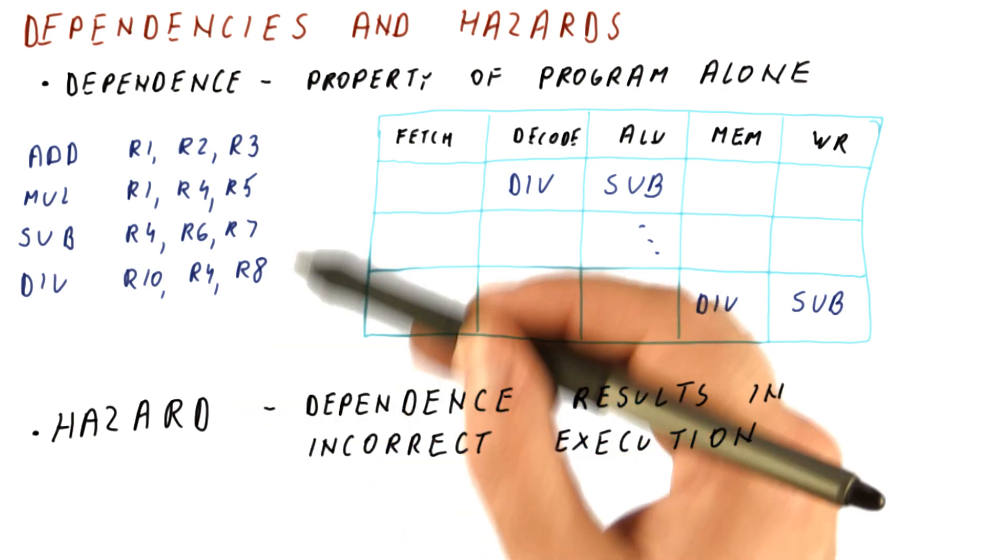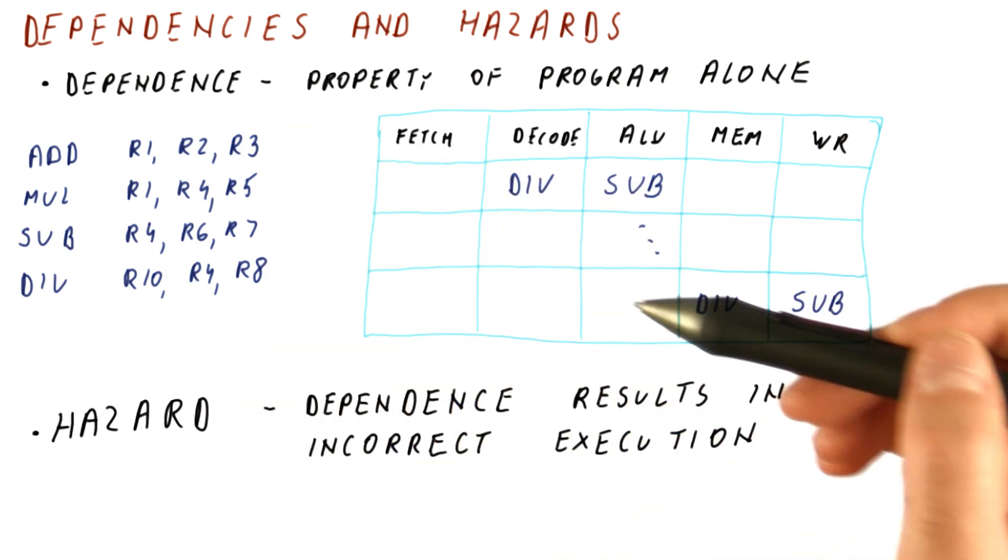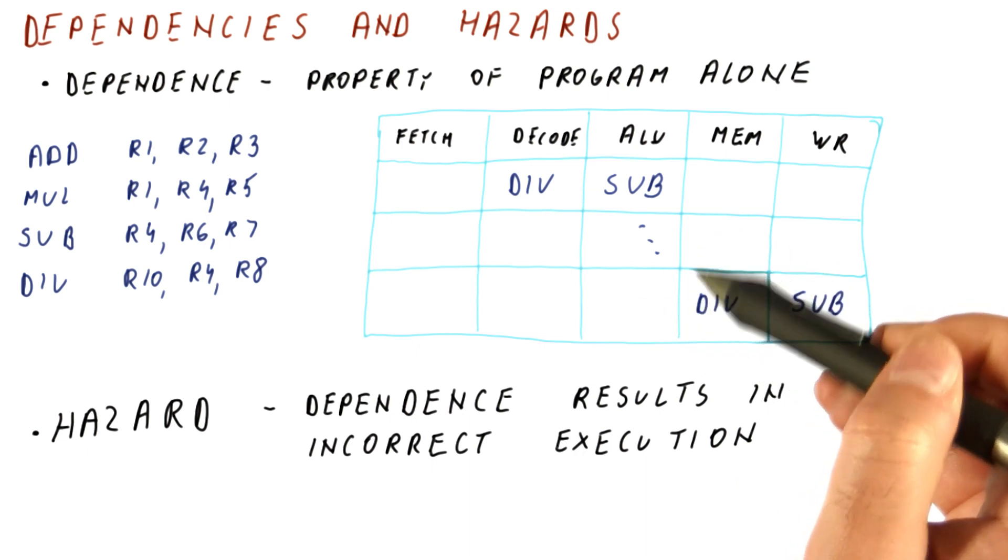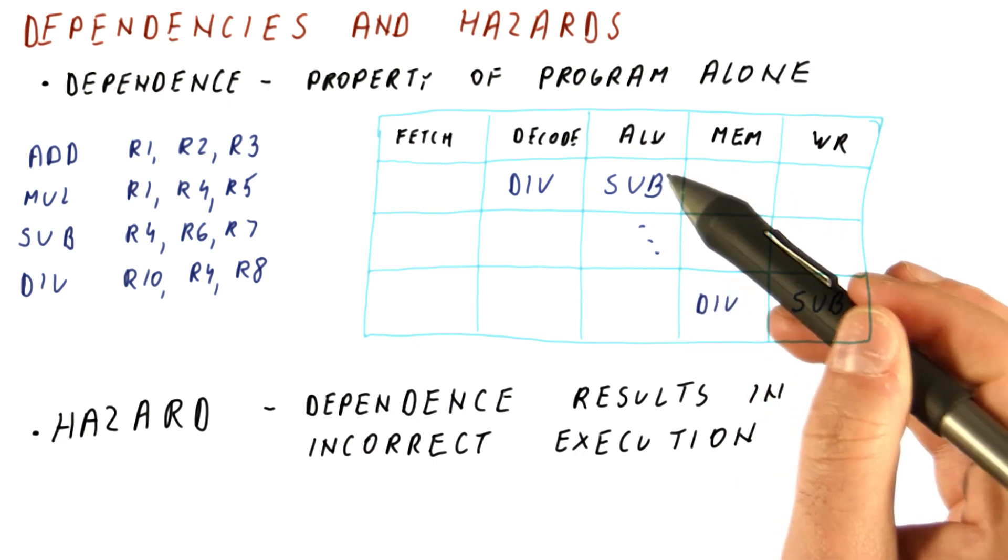Hazards are a property of both the program, because you cannot have a hazard unless you have a dependence, but also of the pipeline itself, how the dependence is interacting with the pipeline.